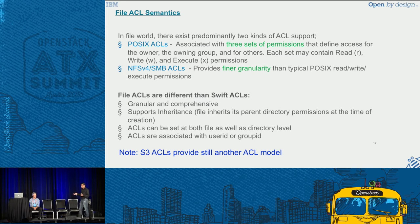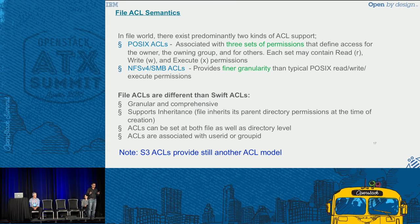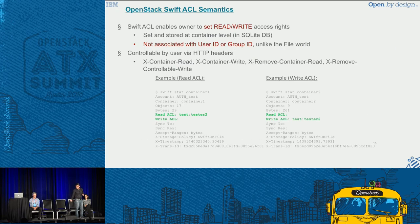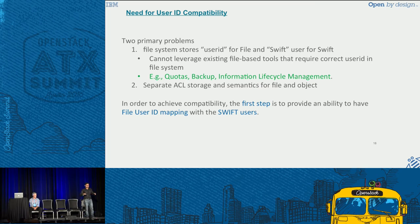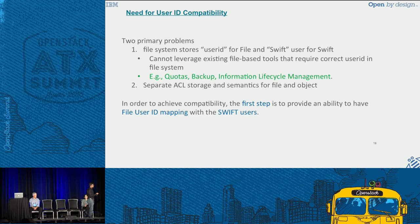Why are we talking about ACLs? Because when we talk about unified file and object, this is one area we have to get right. The fundamental to getting ACL semantics right between file and object is to get the user ID mapping right — user ID for both object and file access. For user ID compatibility: the file system stores the user ID for a file, while Swift stores objects as files with the Swift identity — a special Swift user. This means you cannot leverage existing file-based tools that require the correct user ID. For example, Spectrum Scale has capabilities like backup quotas and information lifecycle management, which are all based on user identity and become important even for the object-based plane.